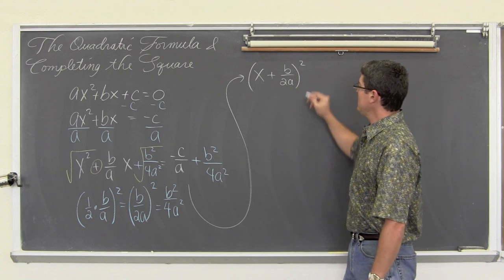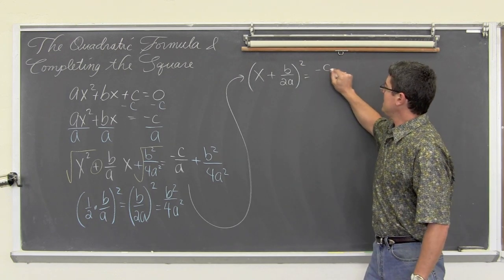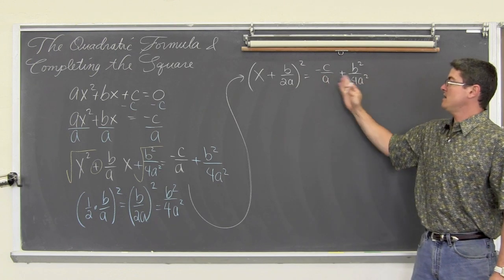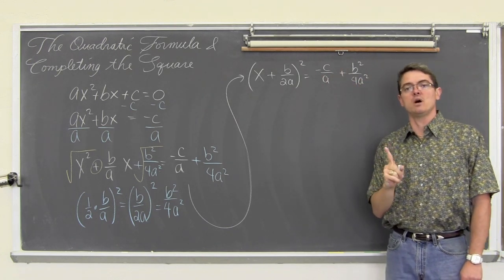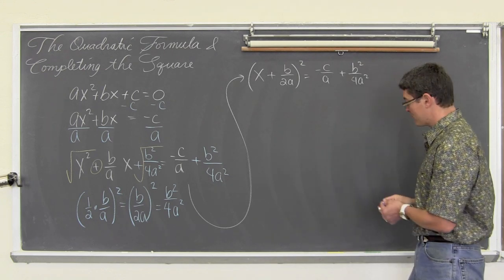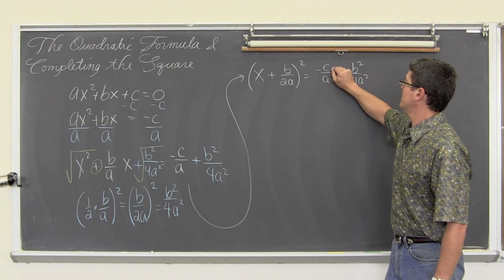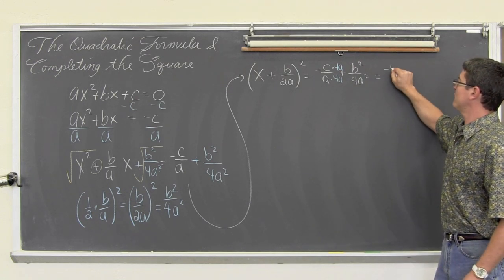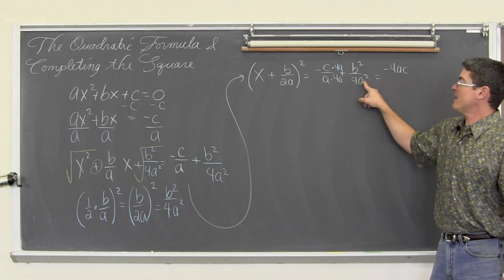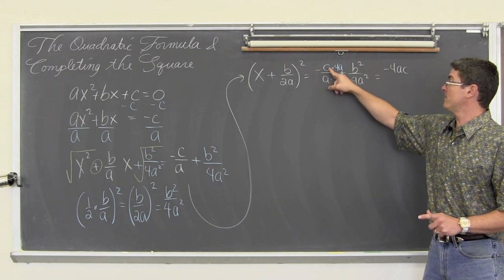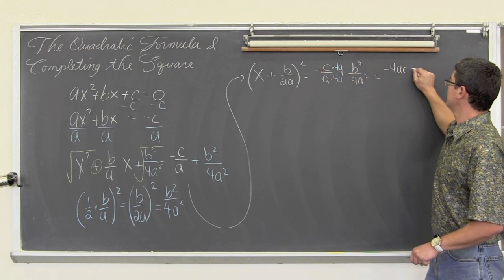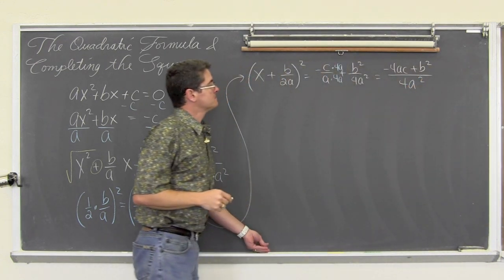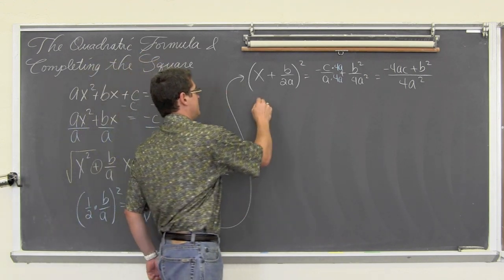We get x plus b over 2a, all squared, equals negative c over a plus b squared over 4a squared. I would like to write these two terms on the right hand side as only one term, so I need common denominators. I am going to multiply the first term by 4a on the top and bottom, giving me negative 4ac. Writing it as one fraction: negative 4ac plus b squared, all over 4a squared.